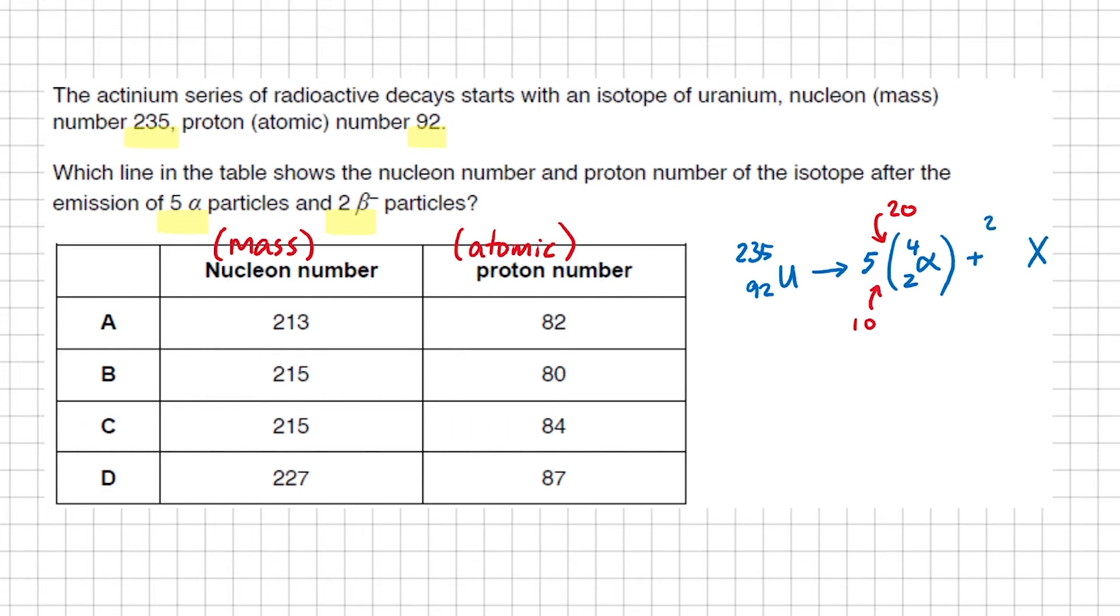235 minus 20, that gives us 215. 92 minus 10, that's 82. So it becomes a new element with a mass number of 215 and atomic number of 82.